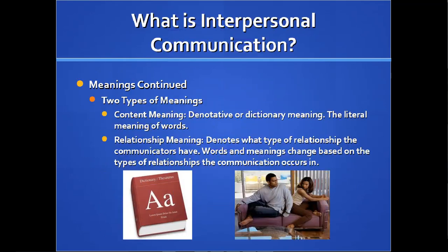There are two types of meanings. Content meaning is the literal, denotative or dictionary meaning of words. But there's also relationship meaning — the type of relationship we have determines what some words mean. The best example is the word love. The love you have for family is different than for a romantic partner, which is different than for students. That word changes based on the type of relationship, but there's also a literal dictionary definition.